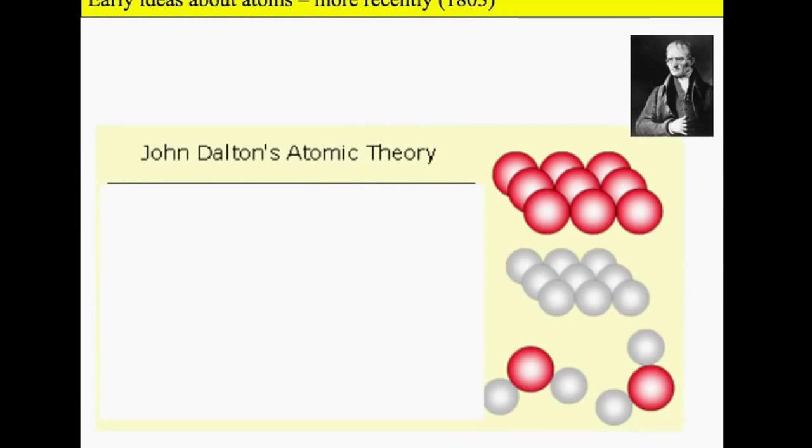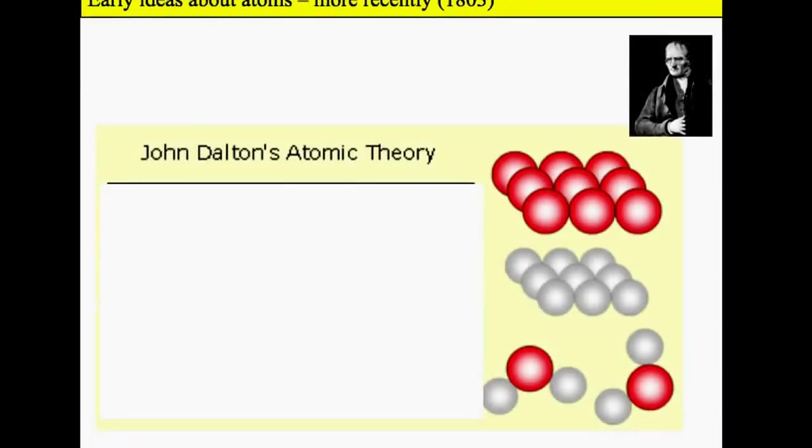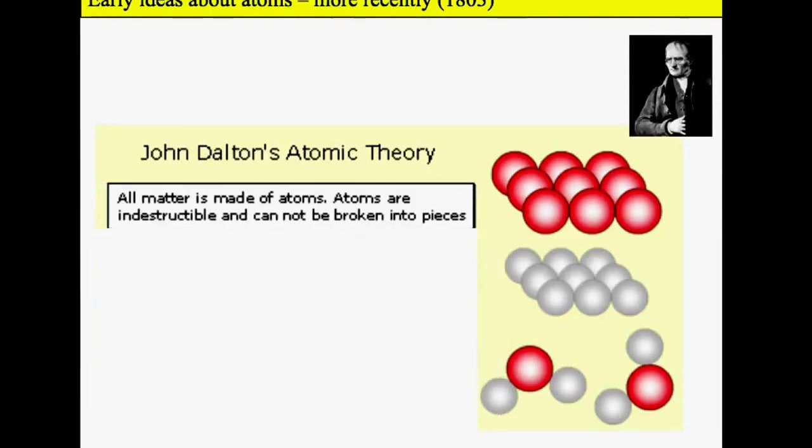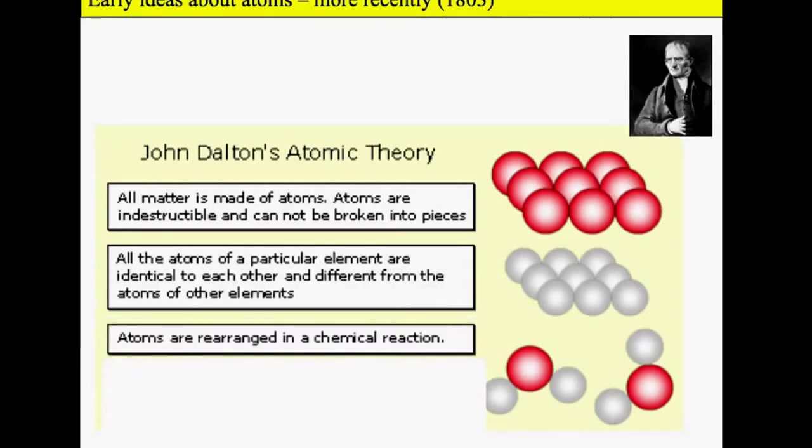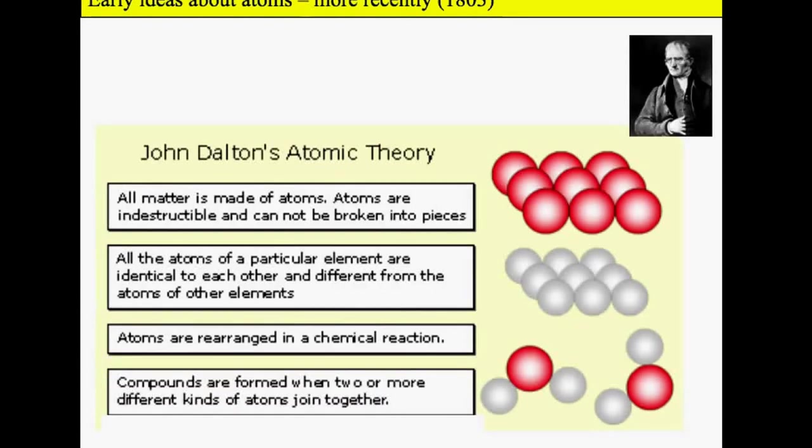More recently in 1803, John Dalton's atomic theory hypothesized that matter is made up of atoms. These atoms are indestructible, they can't be broken down. Atoms of a particular element are identical to each other and different from other atoms. Atoms can be rearranged in chemical reactions and compounds are formed when two or more different kinds of atoms are joined together.